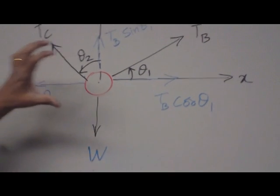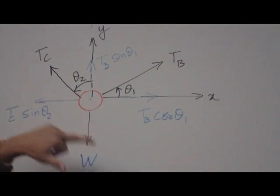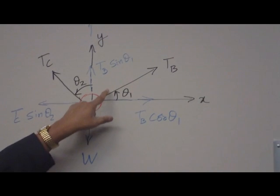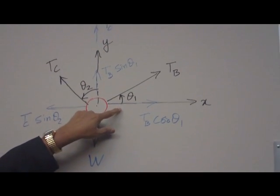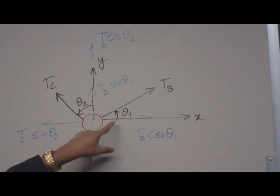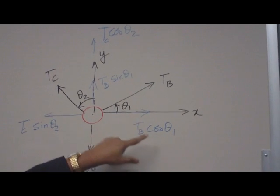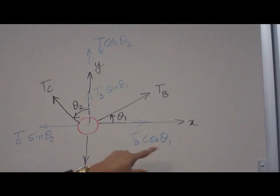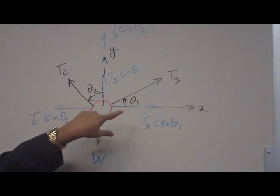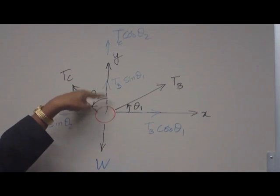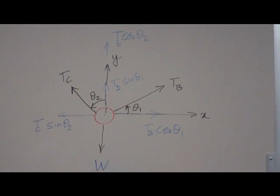Now resolve the incline force, the x and y directions. So TB measured from horizontal axis. So the horizontal axis will be a cosine component, TB cosine theta 1. The sine component is other axis, which is vertical axis, TB sine theta 1.